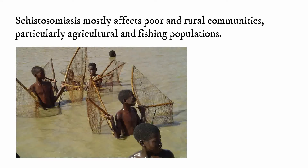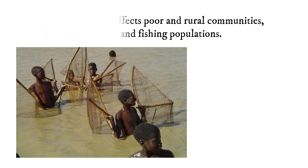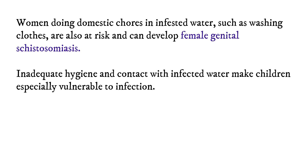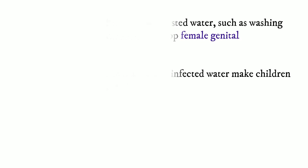Schistosomiasis mostly affects poor and rural communities, particularly agricultural and fishing populations. Women doing domestic chores in infested waters, such as washing clothes, are also at risk and can develop female genital schistosomiasis. Inadequate hygiene and contact with infected water can make children especially vulnerable to infection as well.